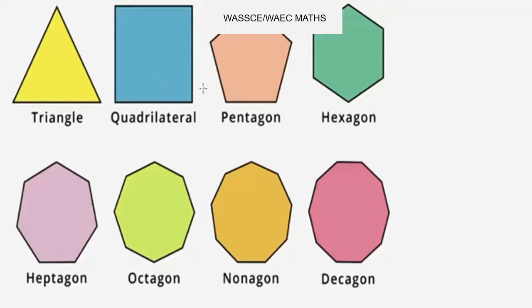In regular polygons all the sides and angles are the same. The first example is a triangle. Next is a quadrilateral — a square, a regular four-sided shape. Then pentagon, a five-sided polygon. Hexagon, a six-sided polygon. Heptagon, a seven-sided polygon. Octagon, an eight-sided polygon. Nonagon, a nine-sided polygon. And decagon, a ten-sided polygon.